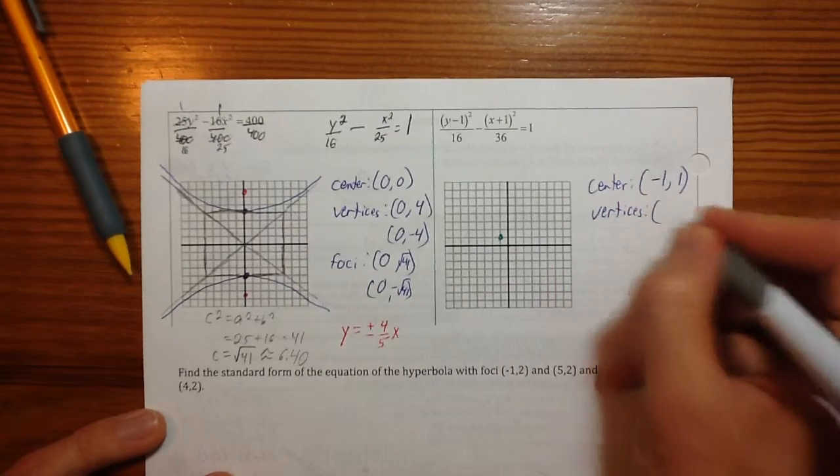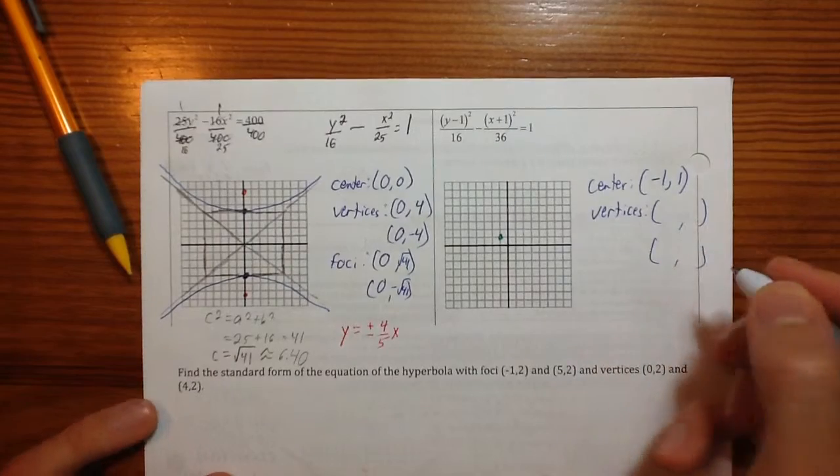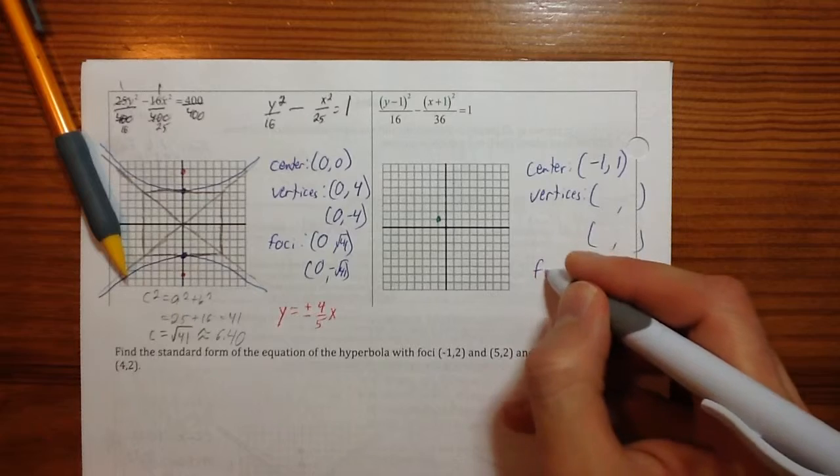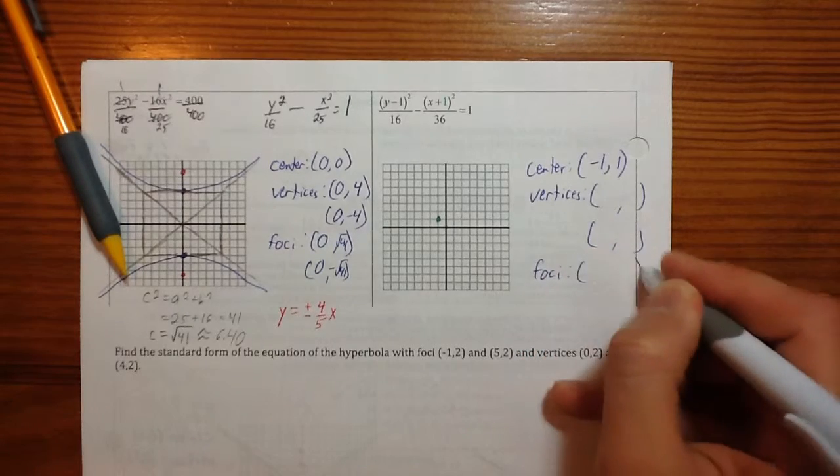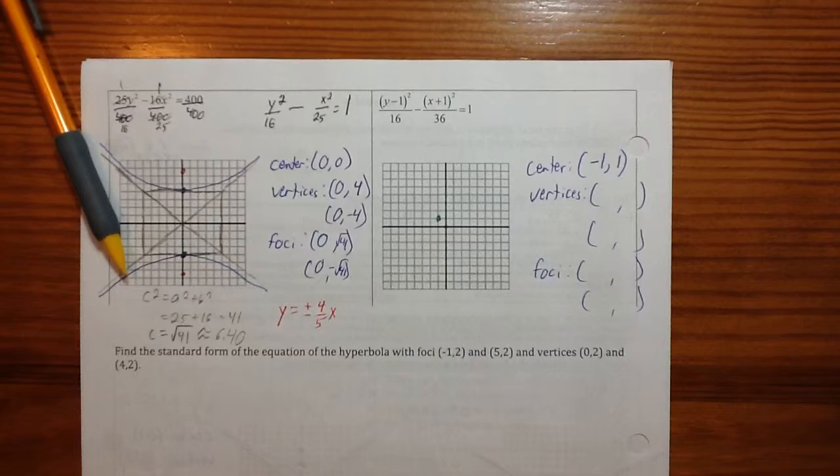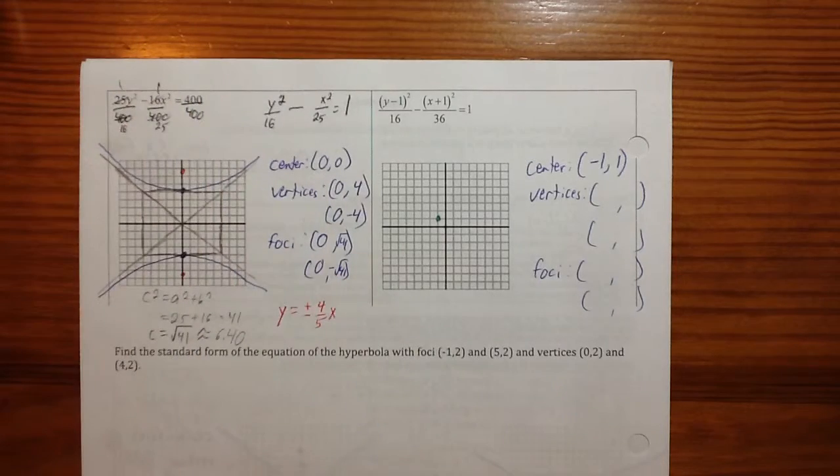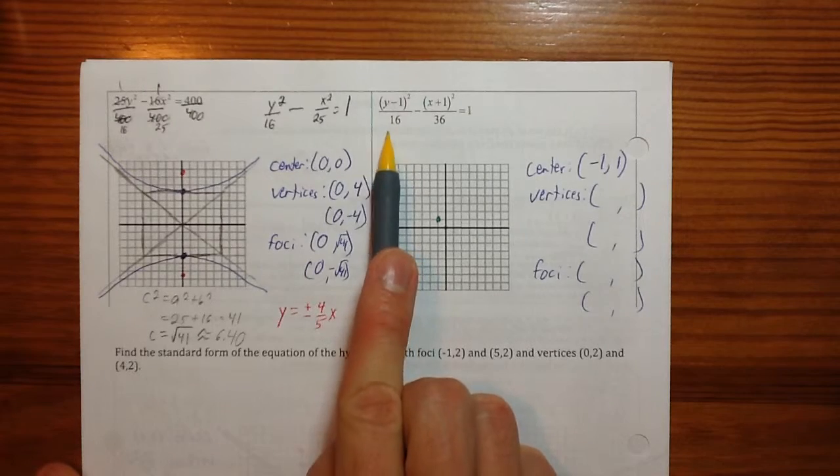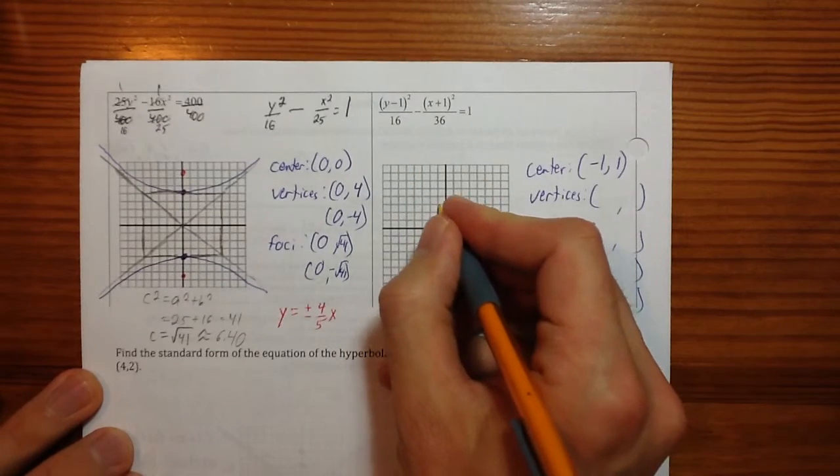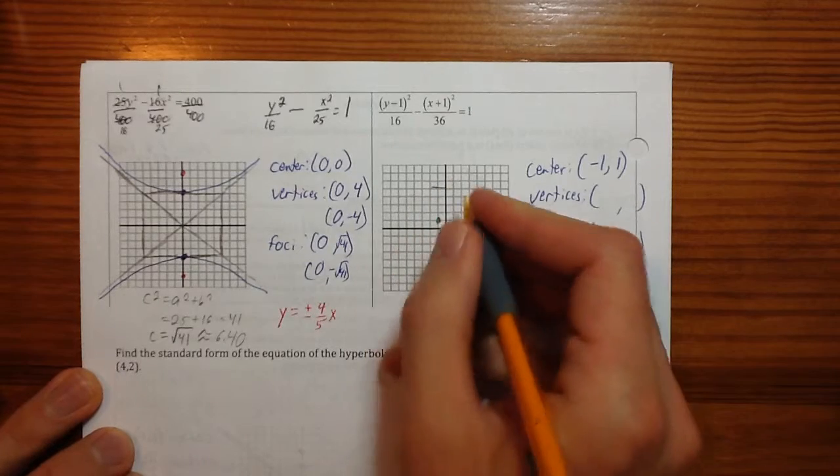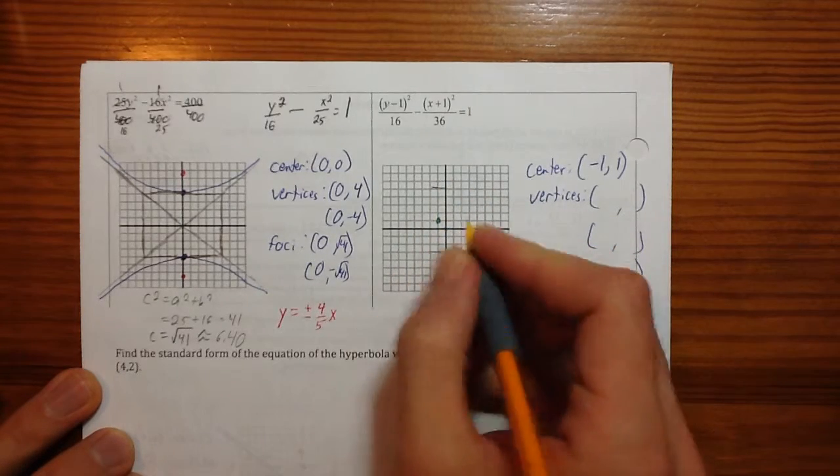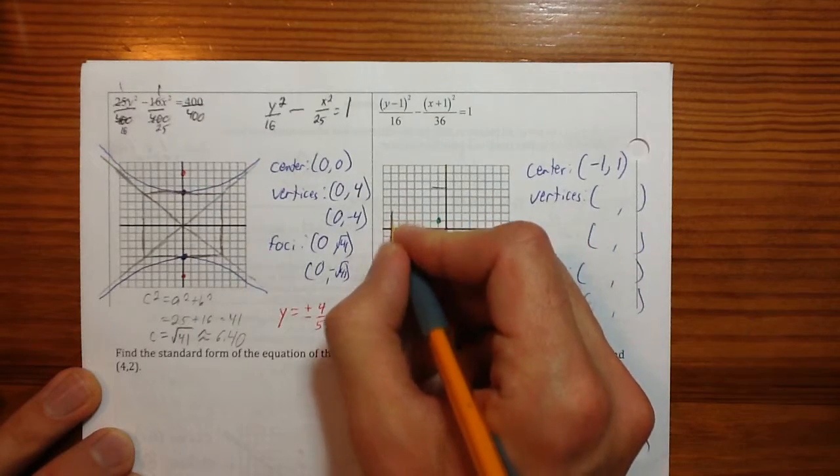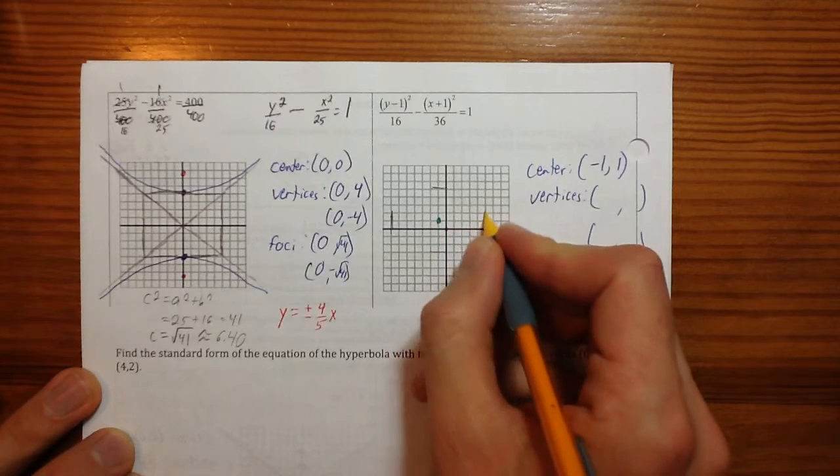Vertices. I can't do the plus and minus thing on this one, by the way. Okay. We will go up and down 4 from the center, not the origin, but from the center of our hyperbola. 1, 2, 3, 4. 1, 2, 3, 4. Left and right, 6. 1, 2, 3, 4, 5, 6. 1, 2, 3, 4, 5, 6.